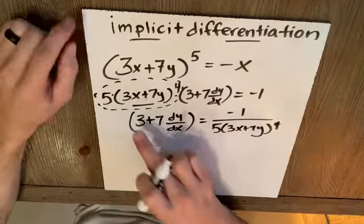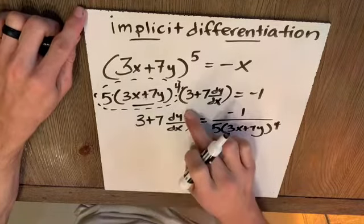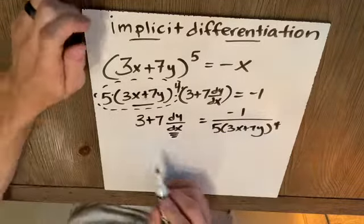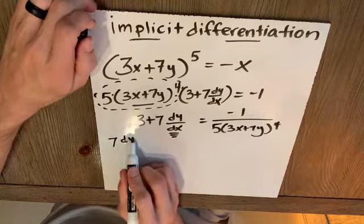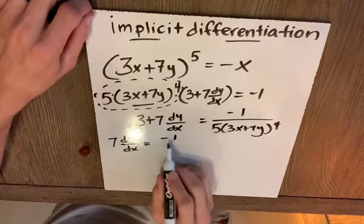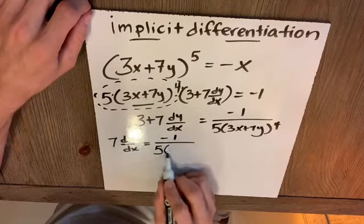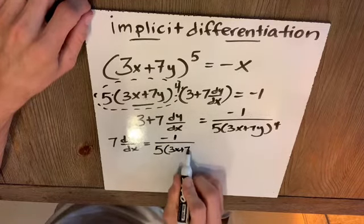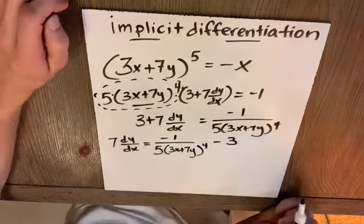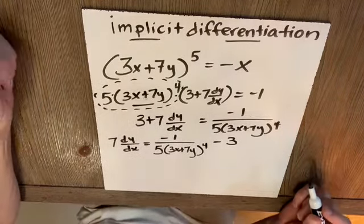Now, I don't really need these parentheses anymore. I'm trying to get dy/dx all alone. I'll subtract three from both sides to give me seven dy/dx is equal to, I'm going to just make a little space here, negative one over five times three x plus seven y to the fourth minus three. Now here, this comes very in handy.